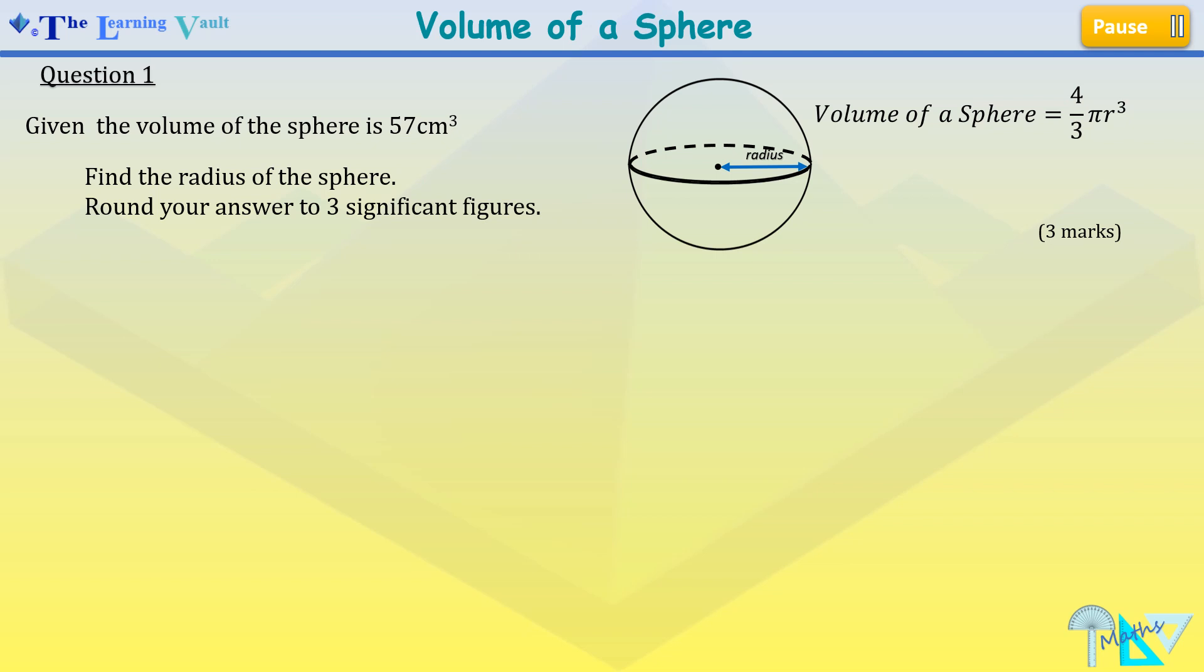Now we're told to find the radius of the sphere. The volume of the sphere has been given to us as 4 over 3 times pi times r cubed. We've been given the volume of the sphere to be 57.